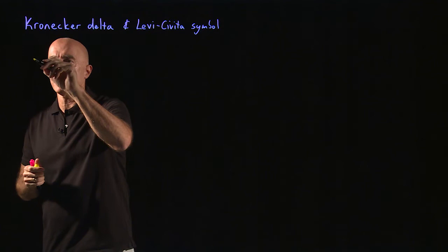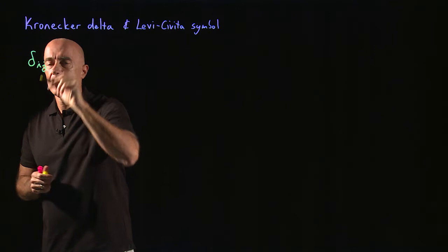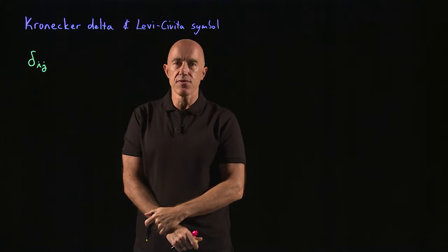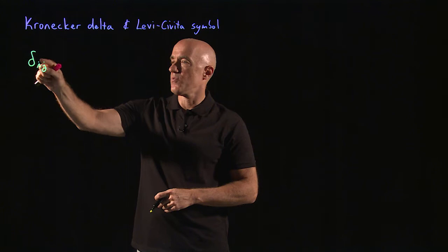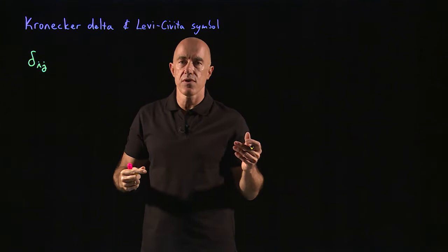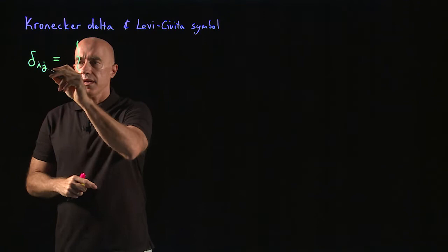So the first one is the Kronecker delta. What's the definition of the Kronecker delta? It has a symbol delta, that's a small delta, and it has two indices i and j. We're talking about three-dimensional space, so i and j can take the value of 1, 2, or 3. So for instance, delta 1,1 or delta 1,2 or delta 1,3, or delta 2,1, etc.